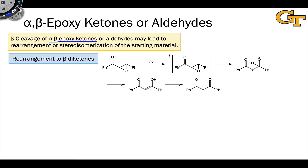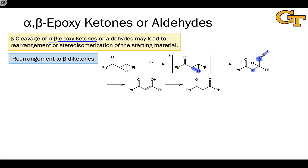Rearrangement to beta diketones is possible through a mechanism that resembles what we just saw for cyclopropyl ketones — we just end up with a beta diketone instead of an enone. Photoexcitation results in cleavage of the carbon-oxygen bond in the epoxide that links the alpha carbon to the epoxide oxygen. This generates a 1,3-diradical, similar to what we just saw, but with an O-dot instead of a C-dot. A disproportionation process, or internal hydrogen atom transfer, then produces an enol, which undergoes tautomerization to form the beta diketone as the final product.